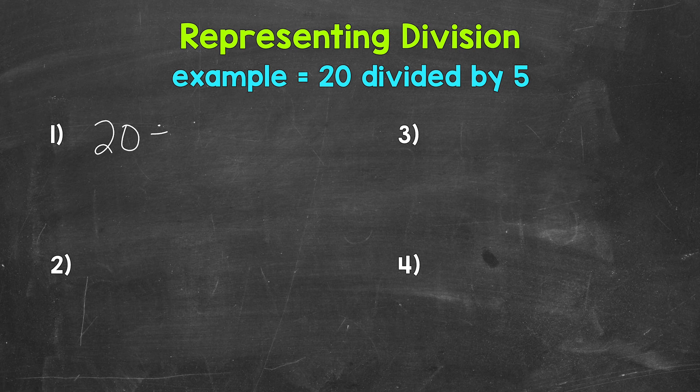So 20 divided by 5. 20 is our dividend, the number we are dividing, and 5 is our divisor, the number we are dividing by.